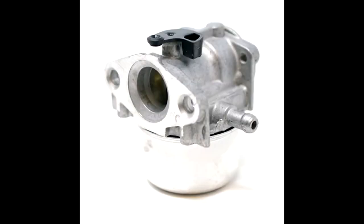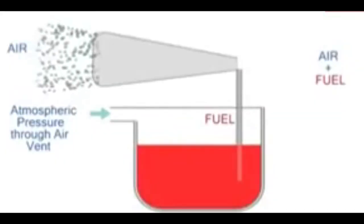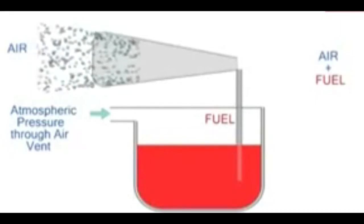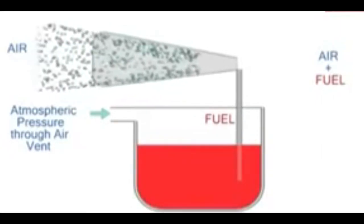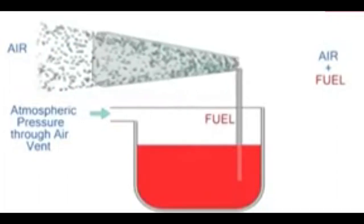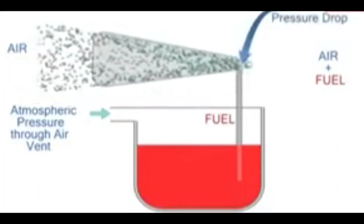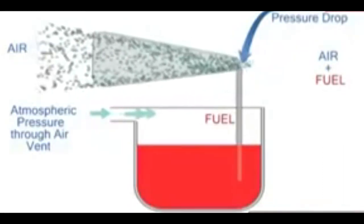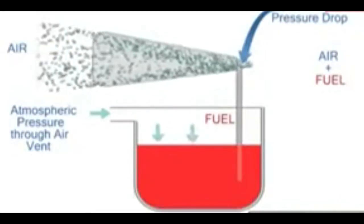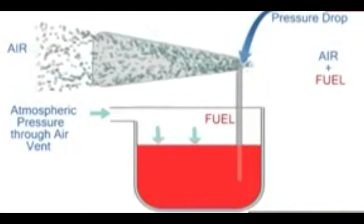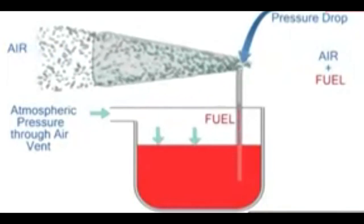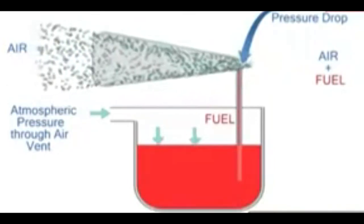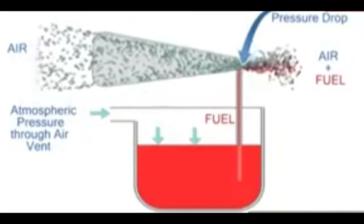Let's start out by explaining a very basic carburetor and how it functions. In this animation, as you can see, when air enters the carburetor it is funneled down into a narrow passage which speeds up the air, creating a low pressure area near the jet. The atmospheric pressure, which is higher, presses on the fuel through a vent tube and pushes the fuel up as it's sucked into the airstream and mixed with the incoming air.